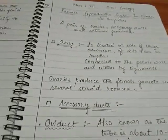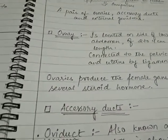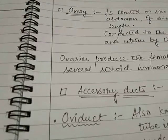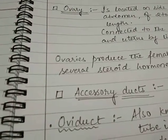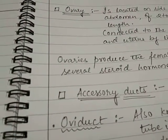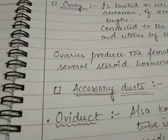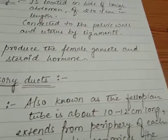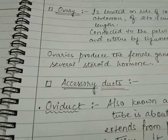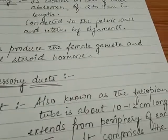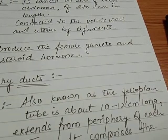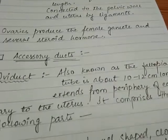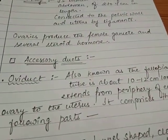Next, we have the accessory ducts. The first accessory duct is the oviduct. Students, you have already studied about this oviduct in your earlier classes, and you are familiar with its common name, which is fallopian tube. The fallopian tube is also known as the oviduct and is usually about 10-12 cm long, extending from the periphery of each ovary to the uterus.